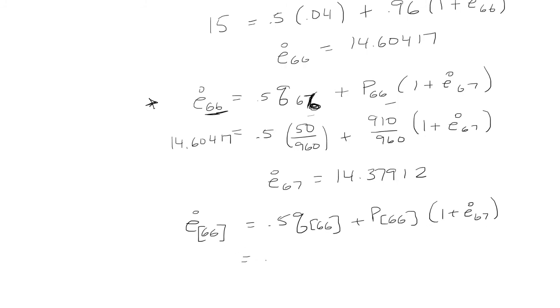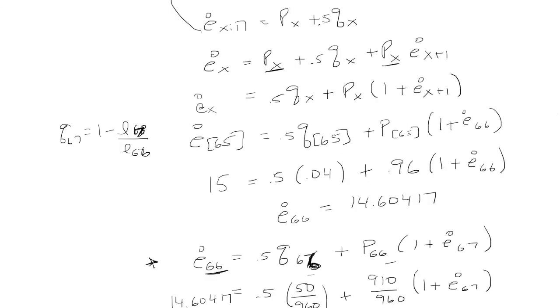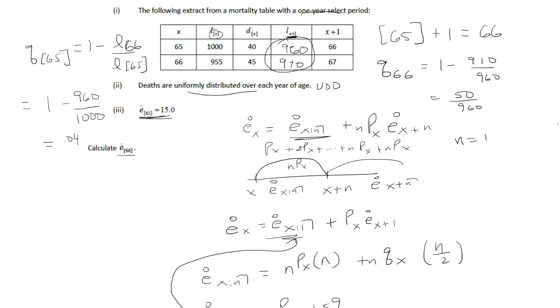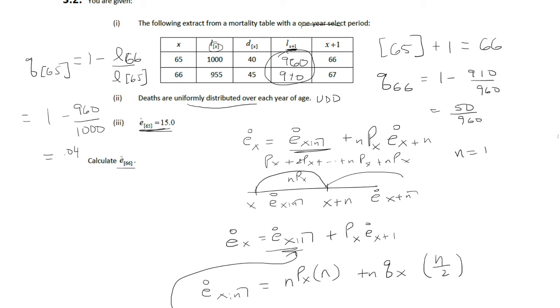So now I can just plug it in. Now the probability of dying at a select age 66, so this time we're going to be using this table.